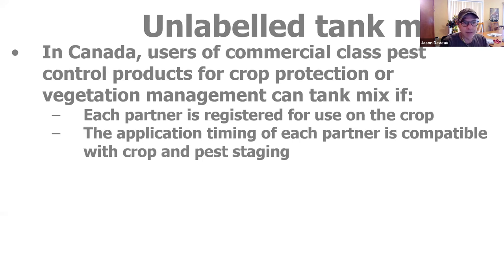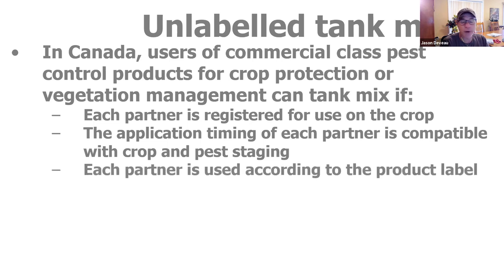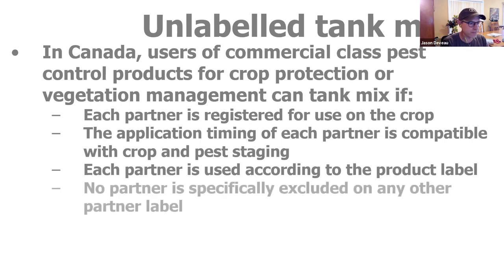The timing has to make sense — you can't ignore IPM and decide to put something on that'll be of use down the road. The problems or opportunities for certain products have to align in time. Each partner's got to be used according to the product label. If something wants to be really dilute and something else wants to be really concentrated, they may not make good bedfellows. You can't put six things on a crop if one of the labels specifically says don't mix me with one of these other tank mix partners.